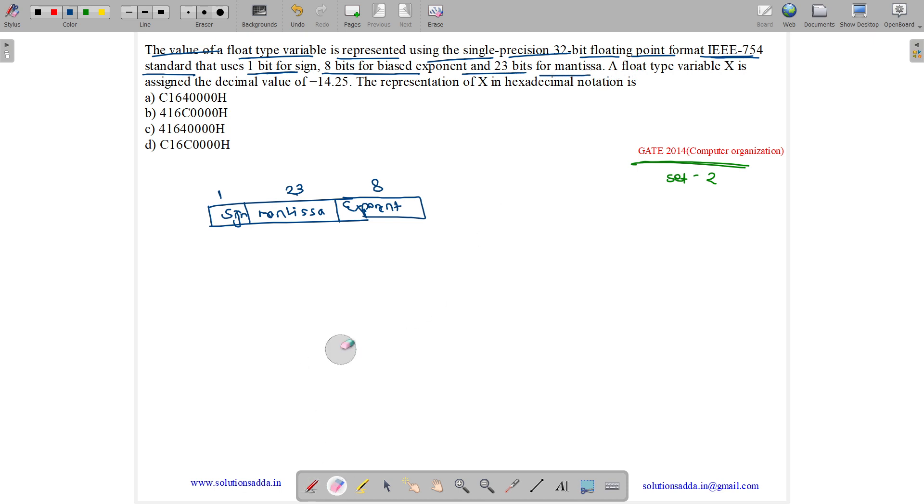So this is SEM representation. You can write first sign will be there, then exponent, and then mantissa. 1, 8 and 23.